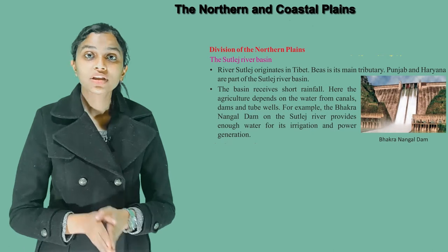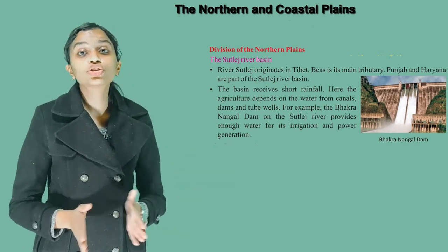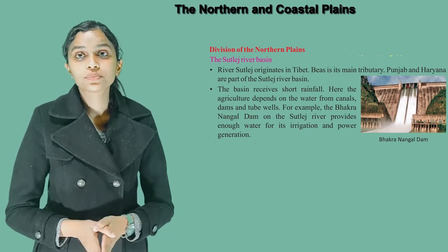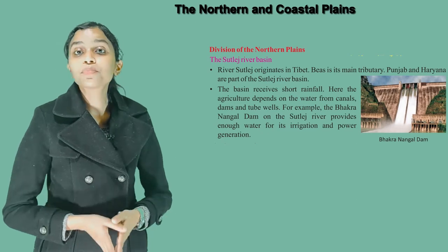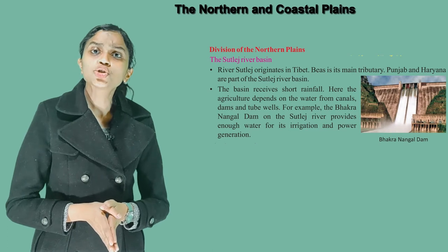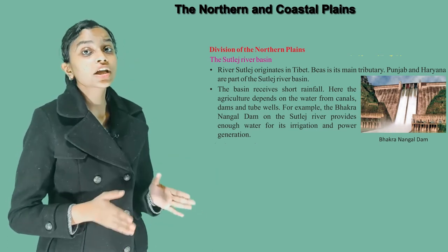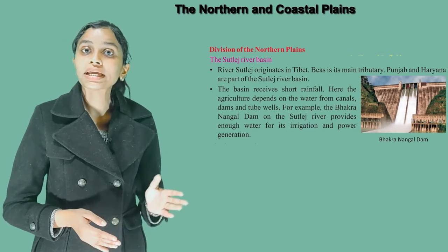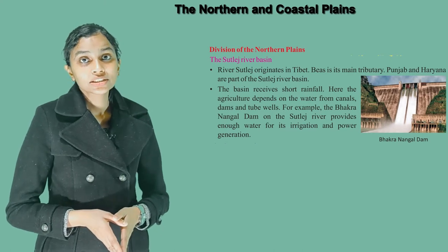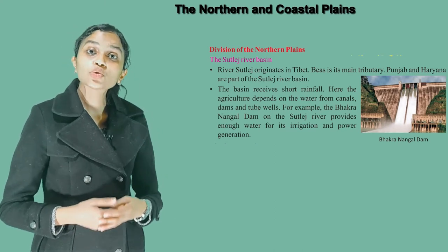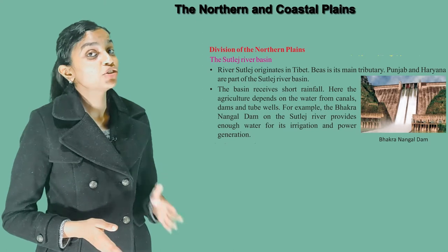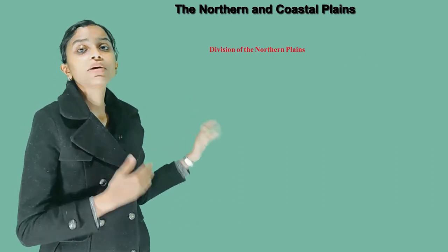The Satloj River Basin. River Satloj originates in Tibet. Beas is its main tributary. Punjab and Haryana are part of the Satloj river basin. The basin receives short rainfall. Here, the agriculture depends on the water from canals, dams and tube wells. For example, the Bhakra Nangal dam on the Satloj river provides water for irrigation and power generation.